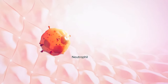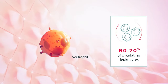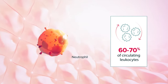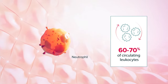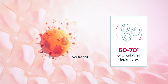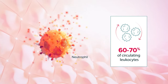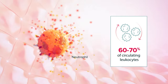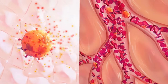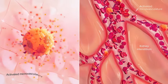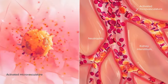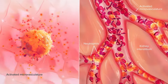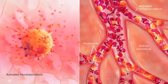The most abundant white blood cells in the human body, neutrophils make up 60-70% of circulating leukocytes and are the innate immune system's first line of defense. When activated, these cells undergo conformational changes that enhance their pro-inflammatory ability to recognize and eliminate pathogens. When the body's normal inflammatory processes are dysregulated, neutrophil apoptosis is delayed, leading to their buildup and causing sustained damage for a longer duration.